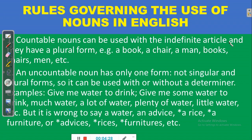Countable nouns can be used with the indefinite article and they have a plural. When you have a singular, you use the indefinite article 'a' or 'an.' For example, 'I saw an elephant' or 'I saw two elephants in the zoo.' With the plural, you don't use the indefinite article. You can use the definite article 'the' when you are talking of something or someone already referred to, known to both speaker and listener — for example, 'give me the book I asked you to buy for me.'